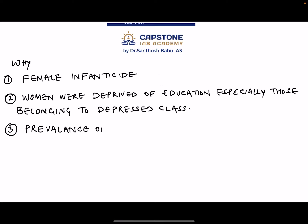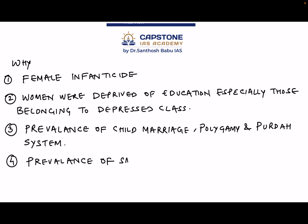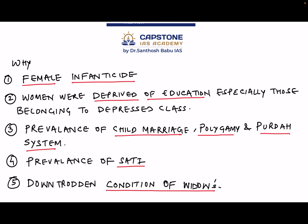The first part is the 'why.' Point one: the prevalence of female infanticide. Point two: women were deprived of education, especially women belonging to the depressed class. We must remember Jyotiba Phule and his wife, who started the first school for depressed class girls.